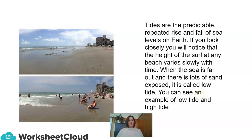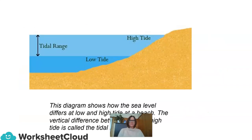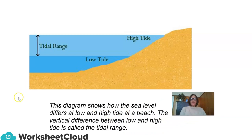Tides are the predictable, repeated rise and fall of sea levels on Earth. If you look closely, you will notice that the height of the surf at any beach varies slowly with time. When the sea is far out and there is lots of sand exposed, it is called low tide. The diagram shows how the sea level differs at low and high tide at a beach. The vertical difference between low and high tide is called the tidal range.